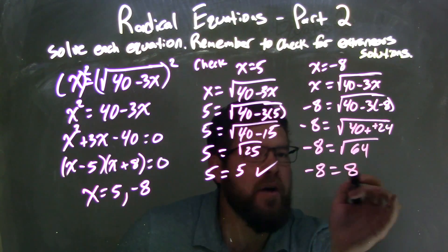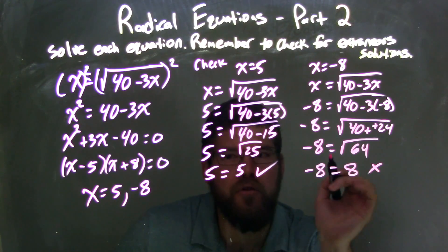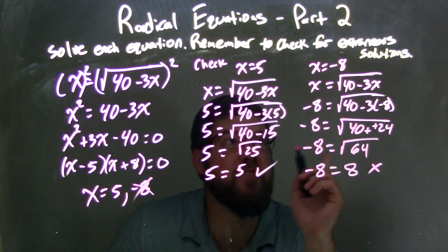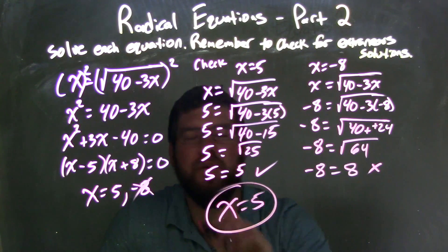Positive 8. They're not the same, right? Negative 8 and positive 8 are not the same. So this negative 8 is not a real solution. It's an extraneous solution. My only true answer is x equals 5.